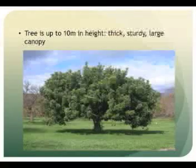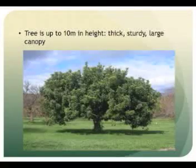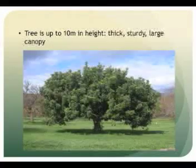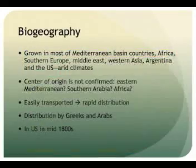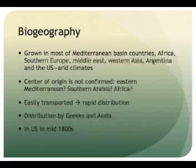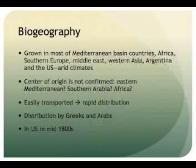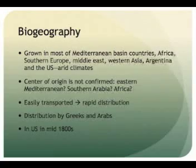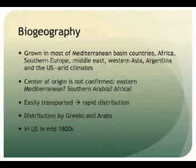The tree is thick. It has a sturdy trunk and many leaves on its widely spread, solid branches. Carob has grown throughout Morocco and in most of the Mediterranean basin countries. It is also found in northern Africa and southern European countries such as Spain, Portugal, and France.